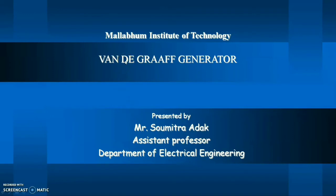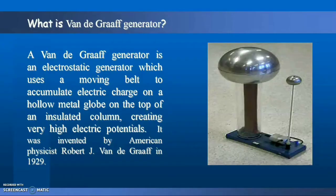A Van de Graaff generator is an electrostatic generator which uses a moving belt to accumulate electric charge on a hollow metal globe on the top of an insulated column, creating very high electric potential. It was first invented by American physicist Robert J. Van de Graaff in the year 1929.